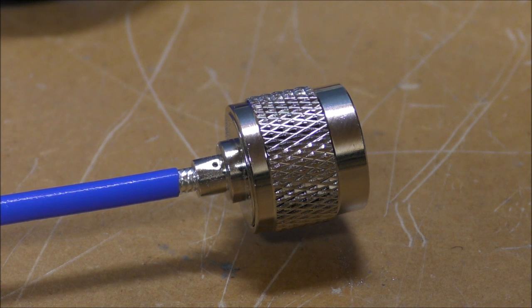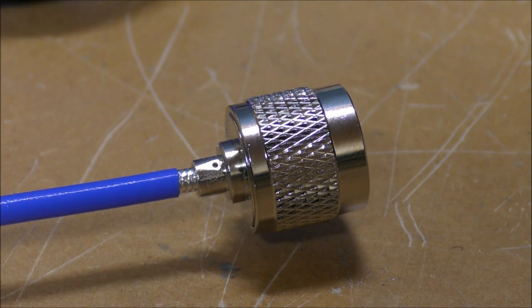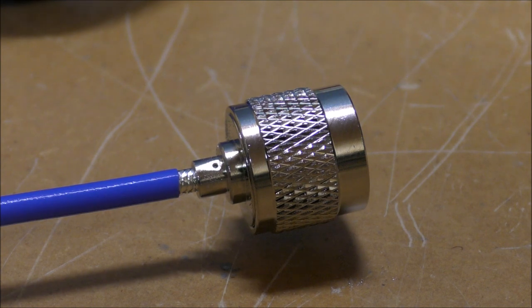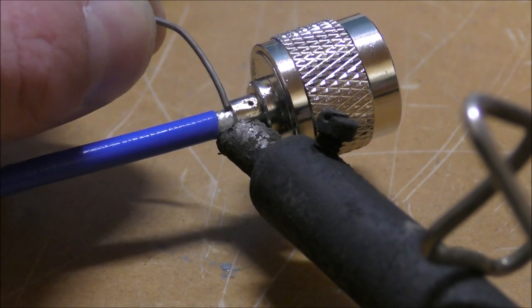The other thing with this hardline is it has a Teflon center conductor. The insulation of the center conductor is Teflon, so it's very difficult to melt it.